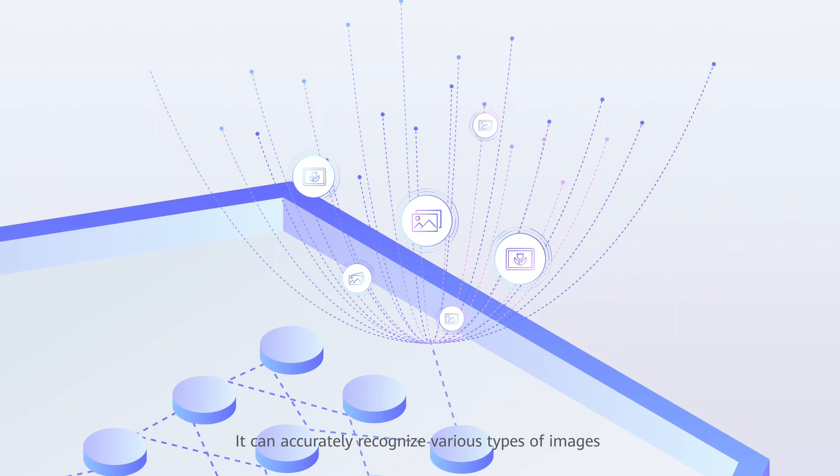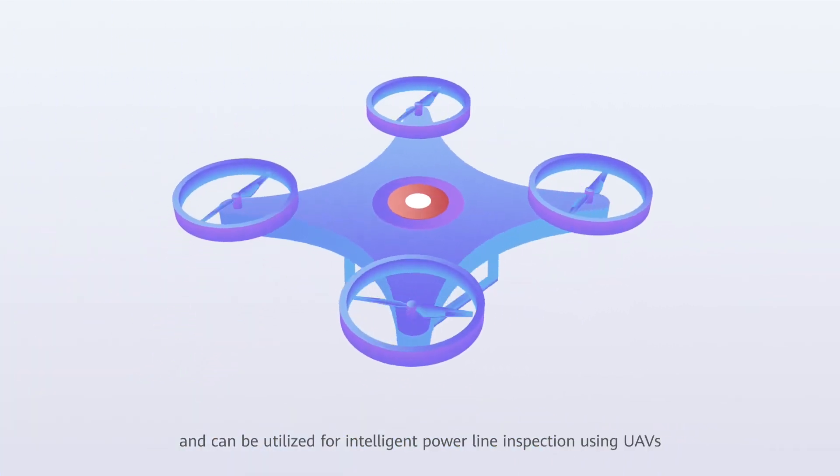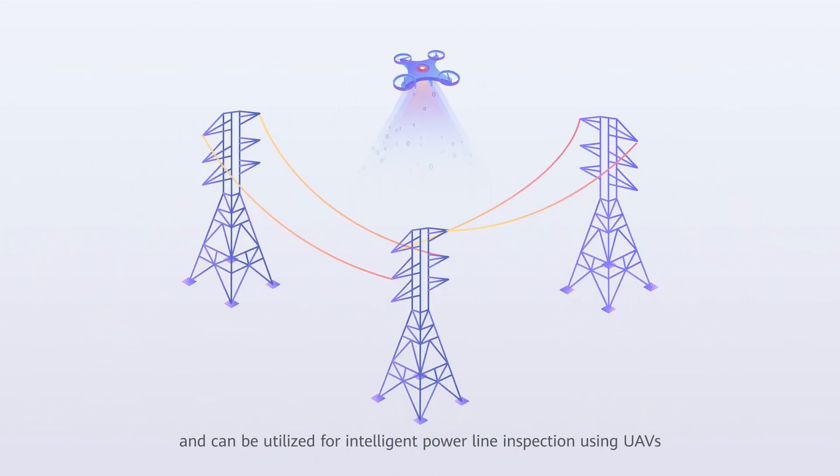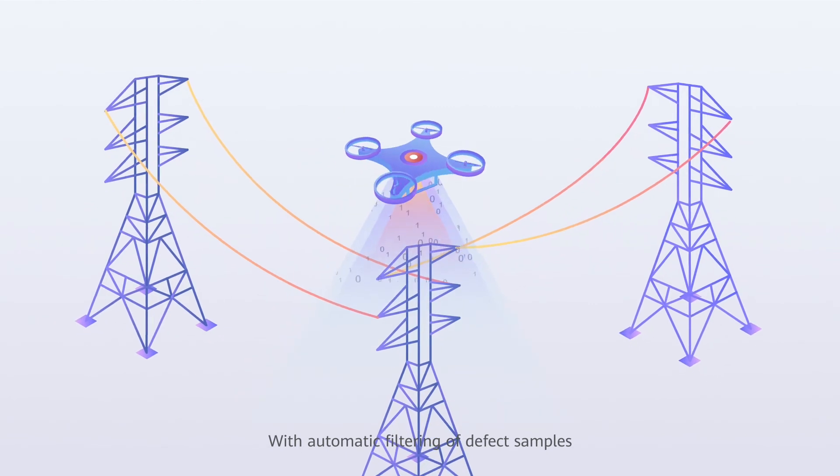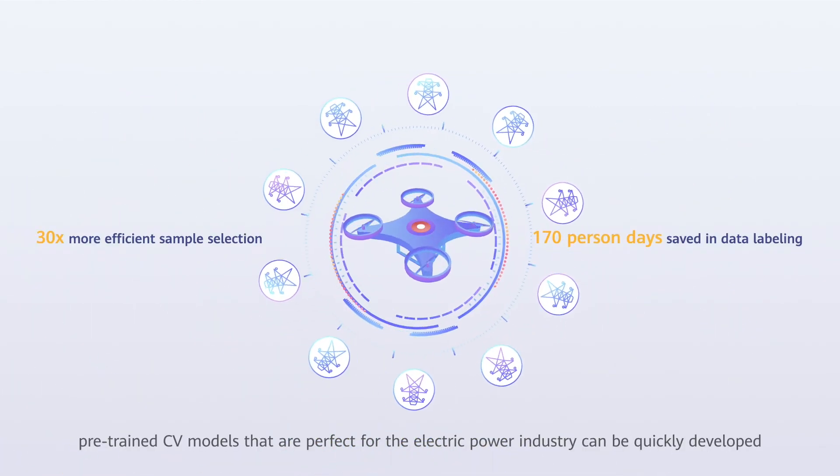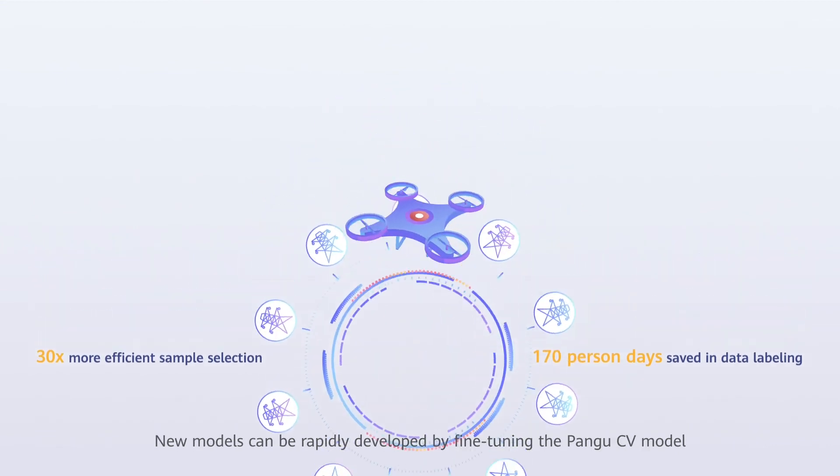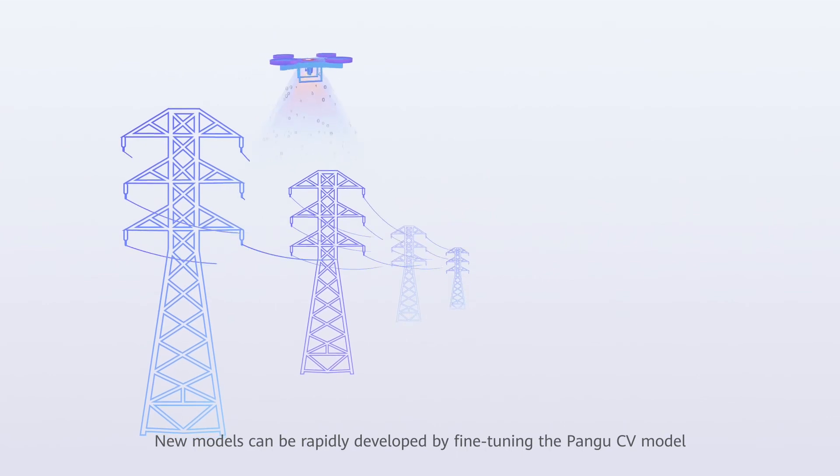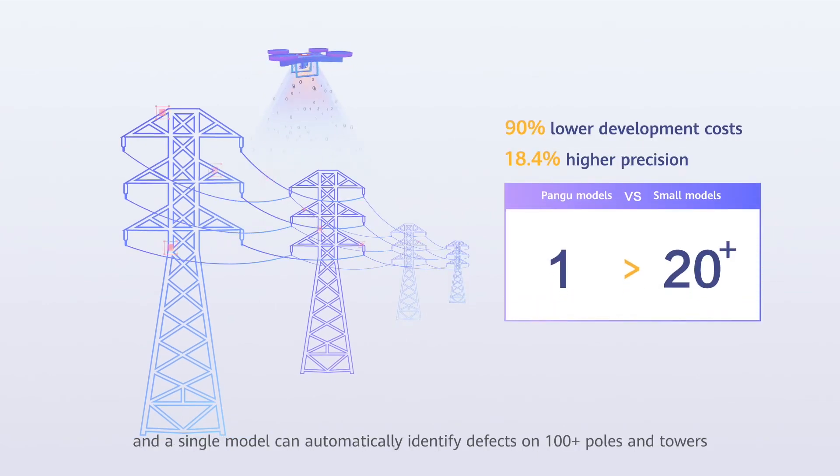It can accurately recognize various types of images from a massive dataset and can be utilized for intelligent powerline inspection using UAVs. With automatic filtering of defect samples and efficient data labeling, pre-trained CV models that are perfect for the electropower industry can be quickly developed. New models can be rapidly developed by fine-tuning the Pangu CV model, and a single model can automatically identify defects on 100-plus poles and towers.